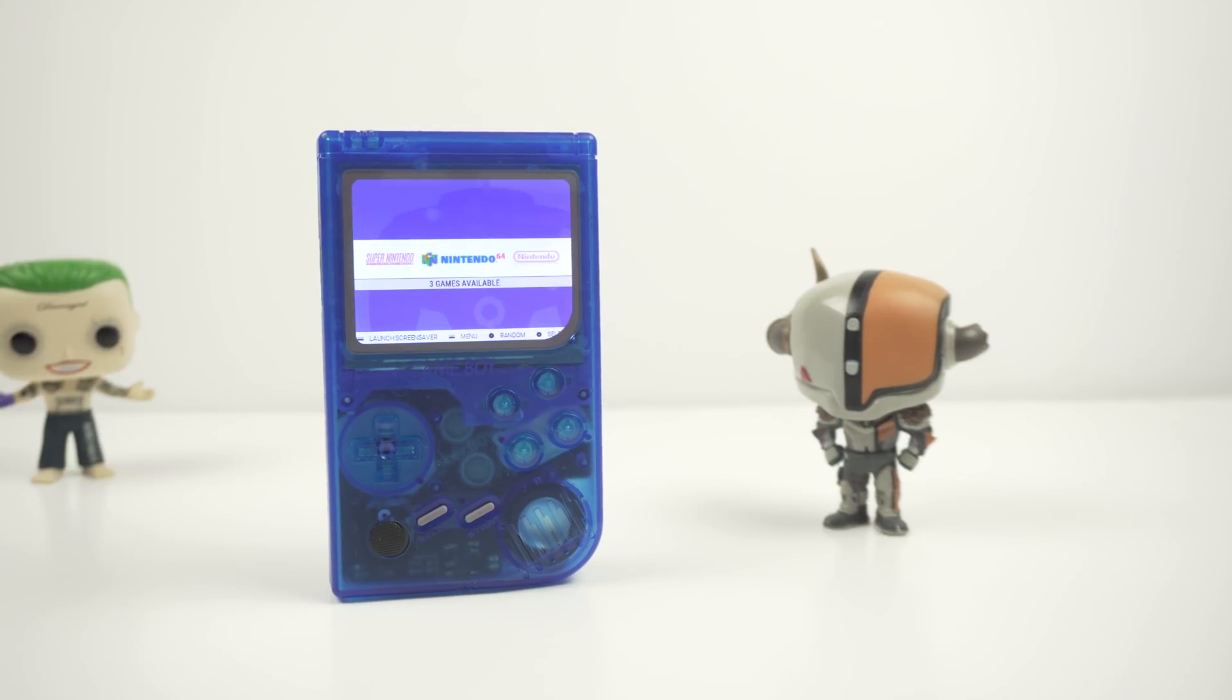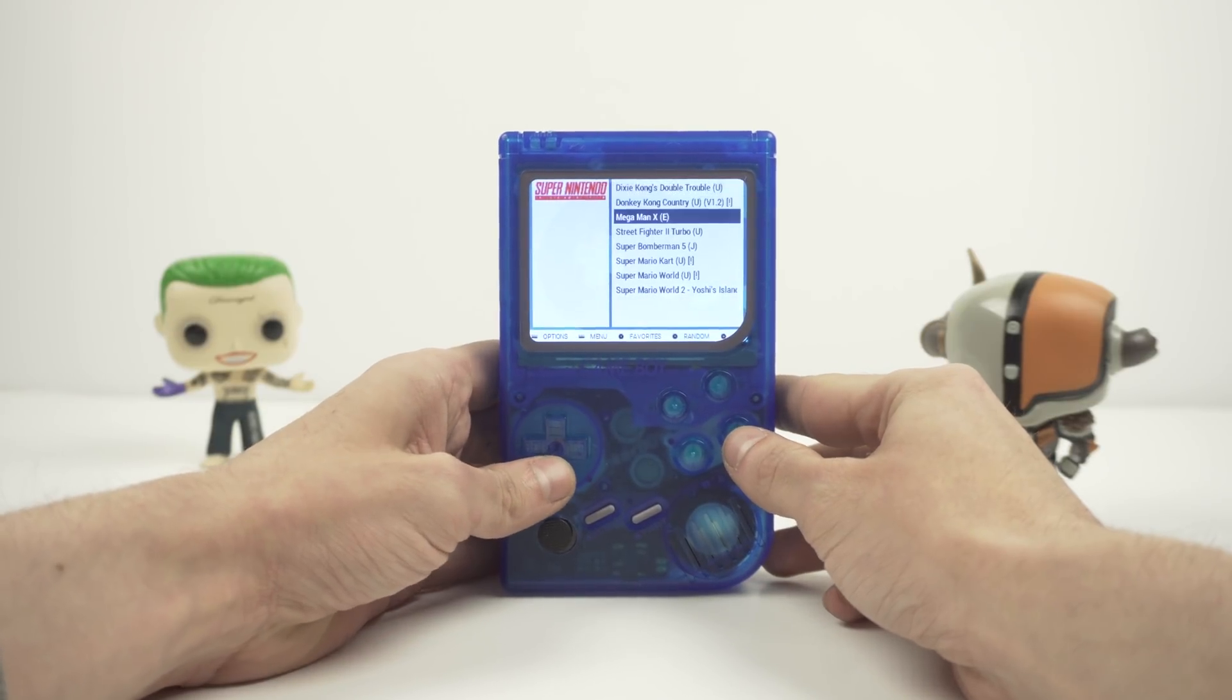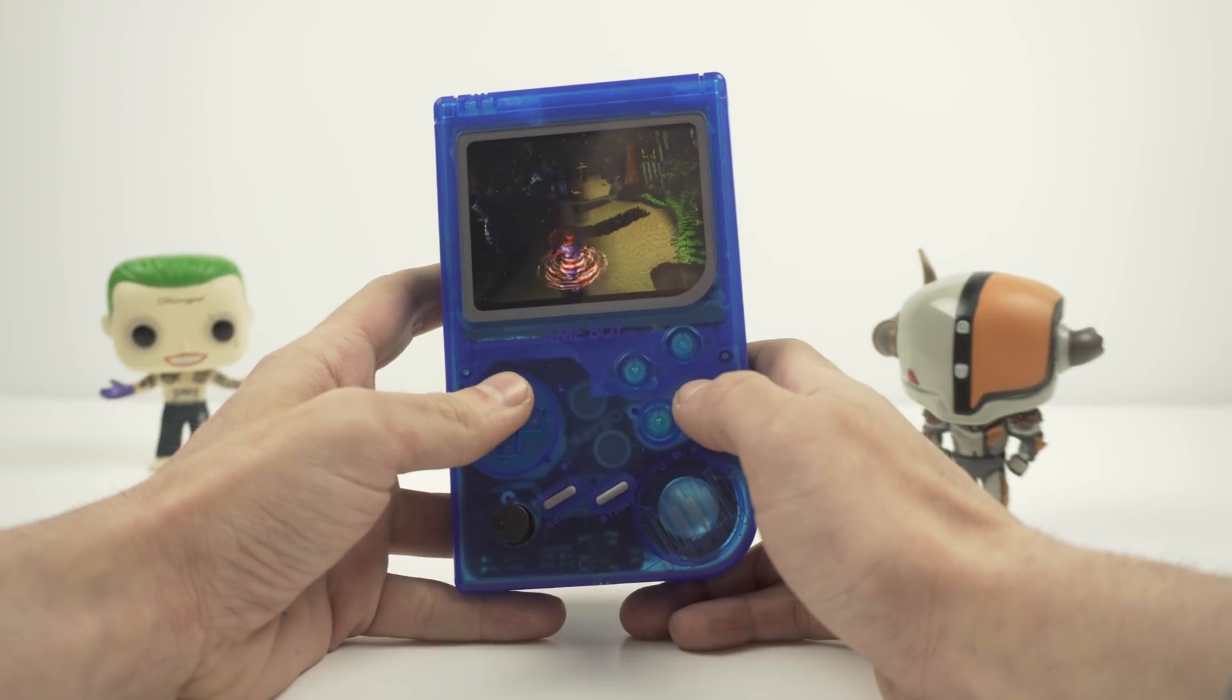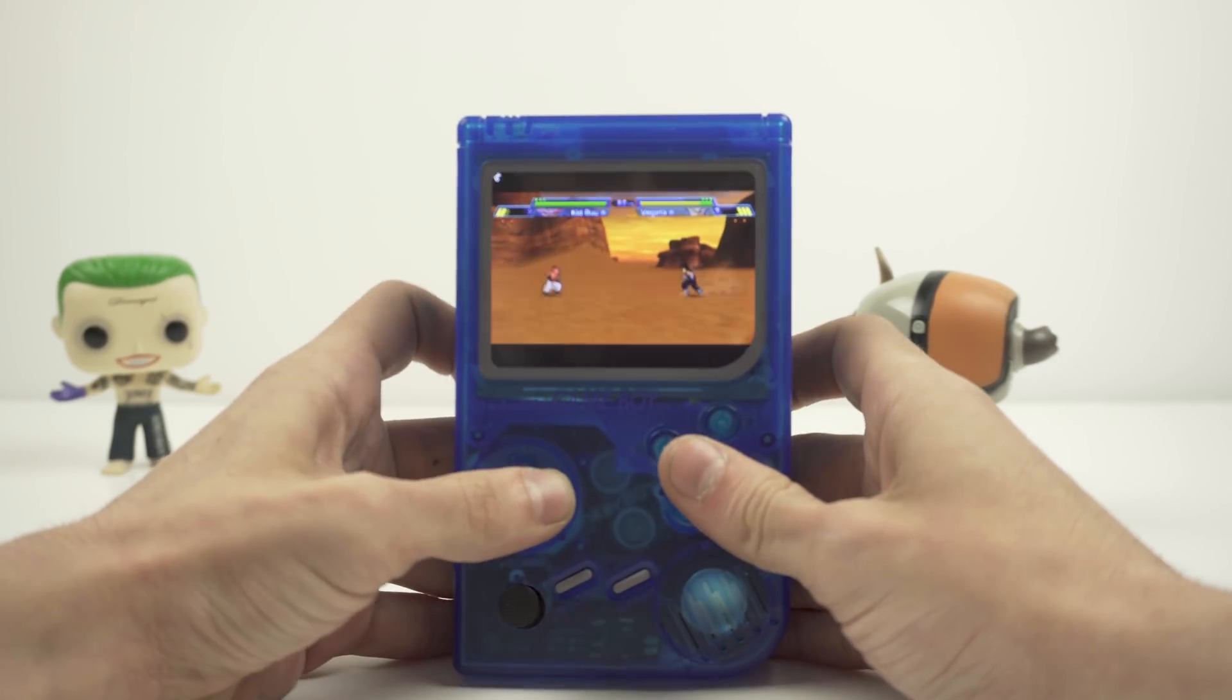And that was it. The new things that a Pi 3 brings to a Game Boy build is the capability to play any games you will like. You can see that the games run smoothly, even some of the PSP games run without a problem.